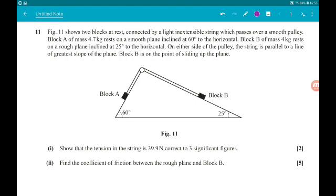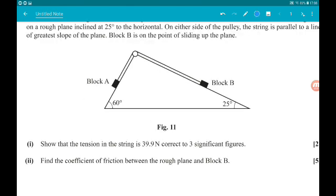Block B is on the point of sliding up the plane. Okay, for part one, we want to show that the tension in the string is 39.9 N to 3 significant figures.